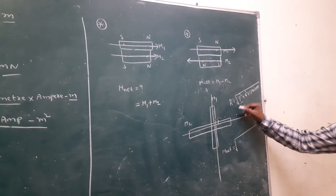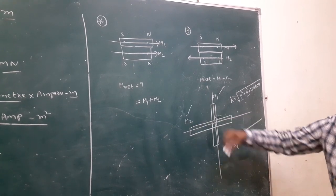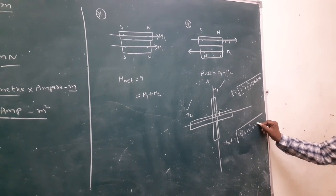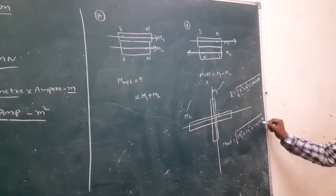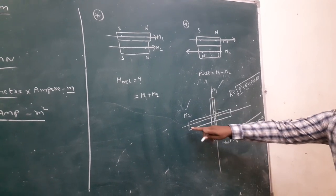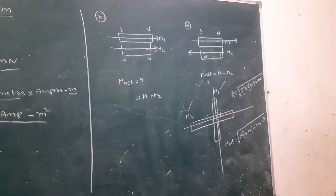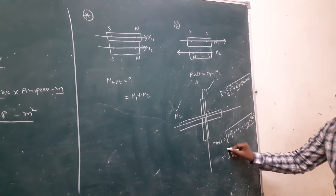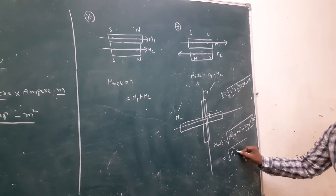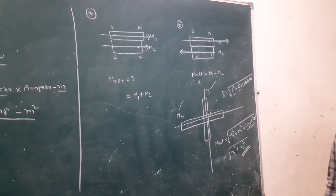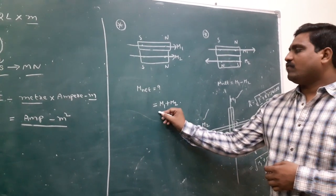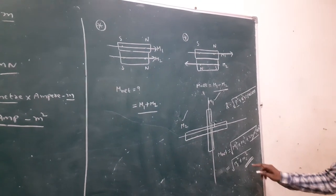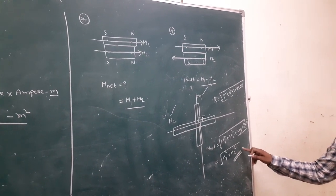Substituting: P is replaced by M1, Q is replaced by M2. So resultant equals under root of M1² plus M2² plus 2·M1·M2·cos 90. Since M1 is along the Y-axis and M2 is along the X-axis, they are mutually perpendicular, so theta becomes 90 degrees, cos 90 equals zero, and the last term vanishes. Finally we get under root of M1² plus M2². Summary: two magnets parallel gives M1 plus M2; two magnets antiparallel gives M1 minus M2; two magnets perpendicular gives under root of M1² plus M2².